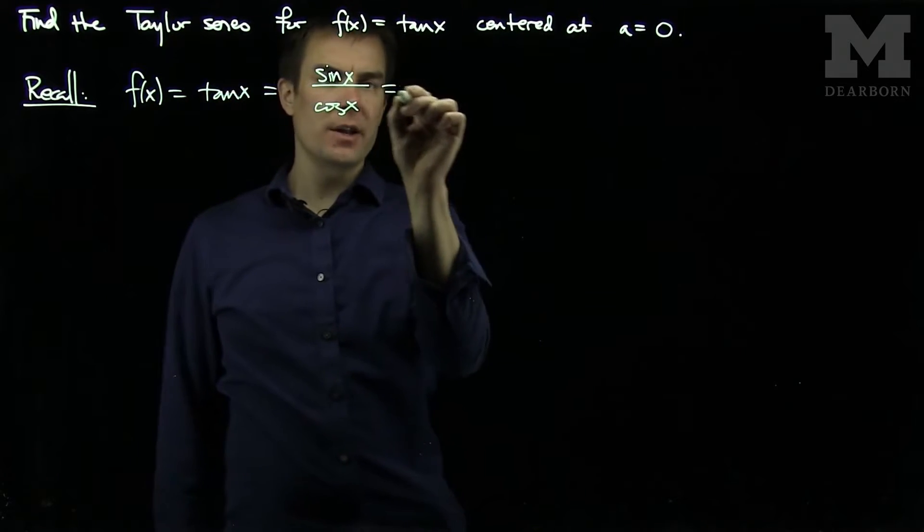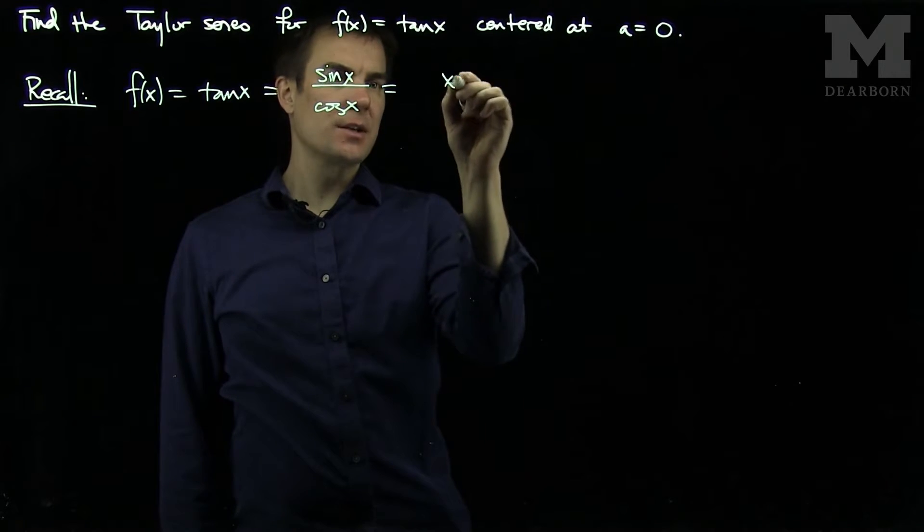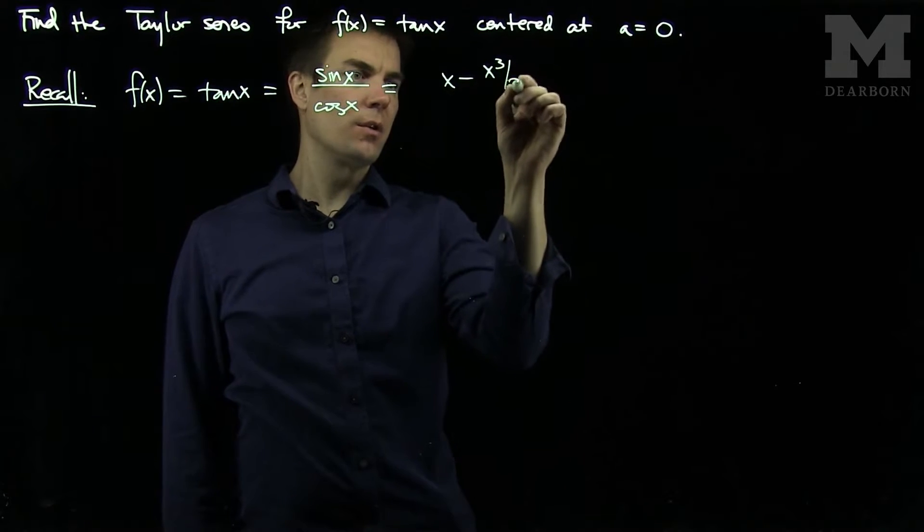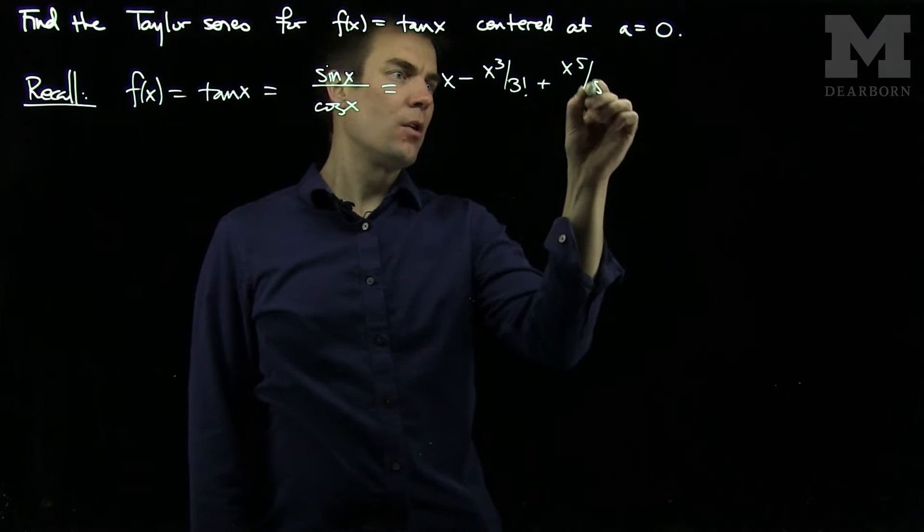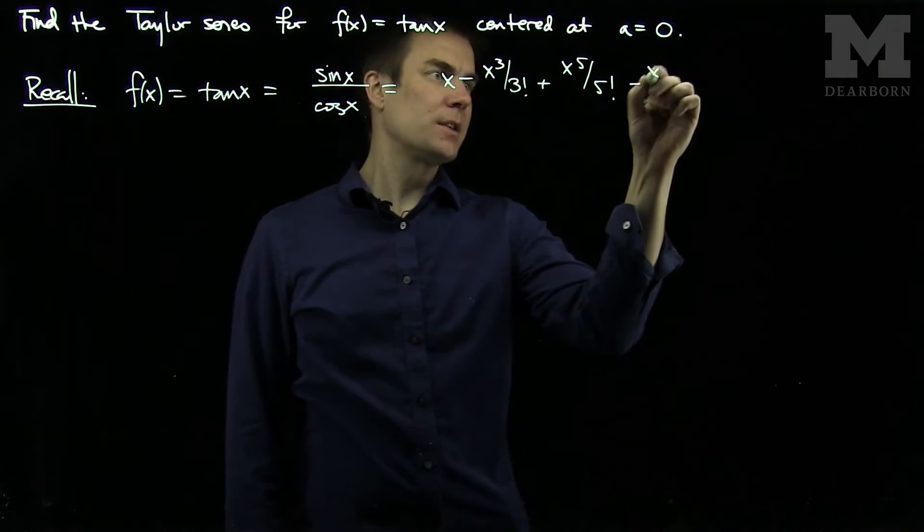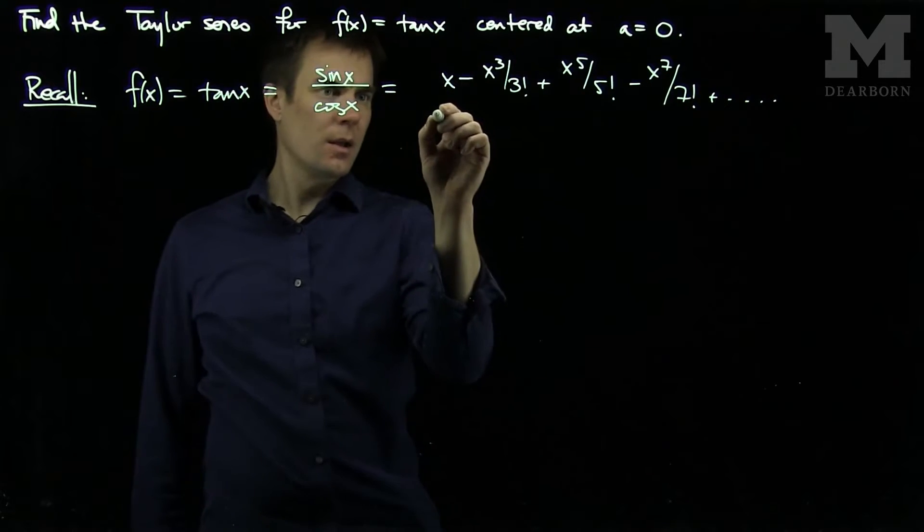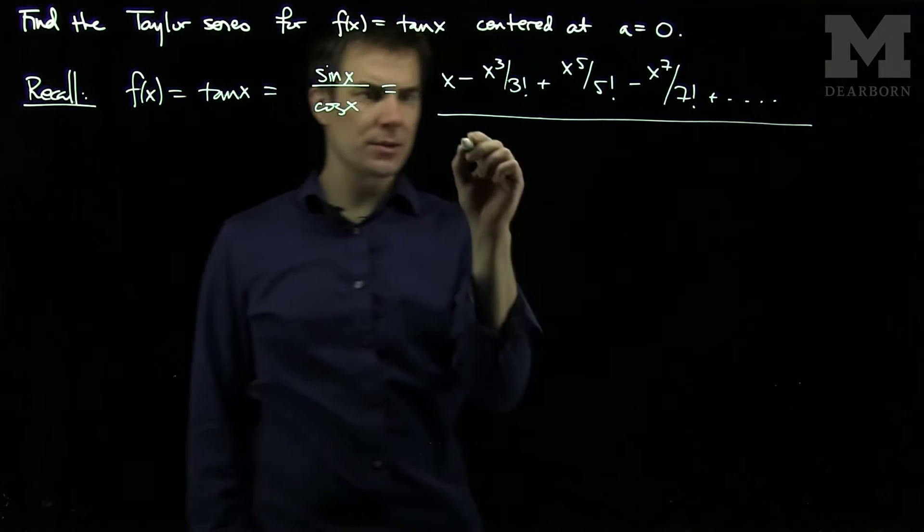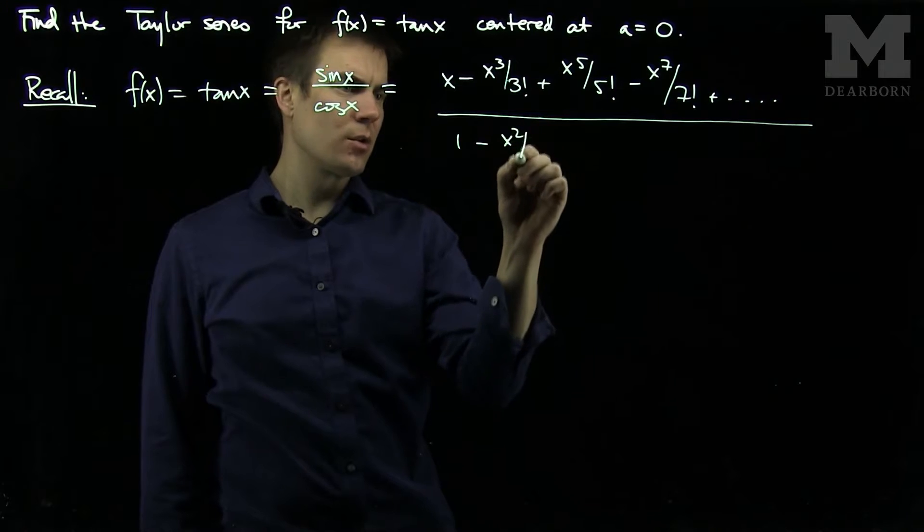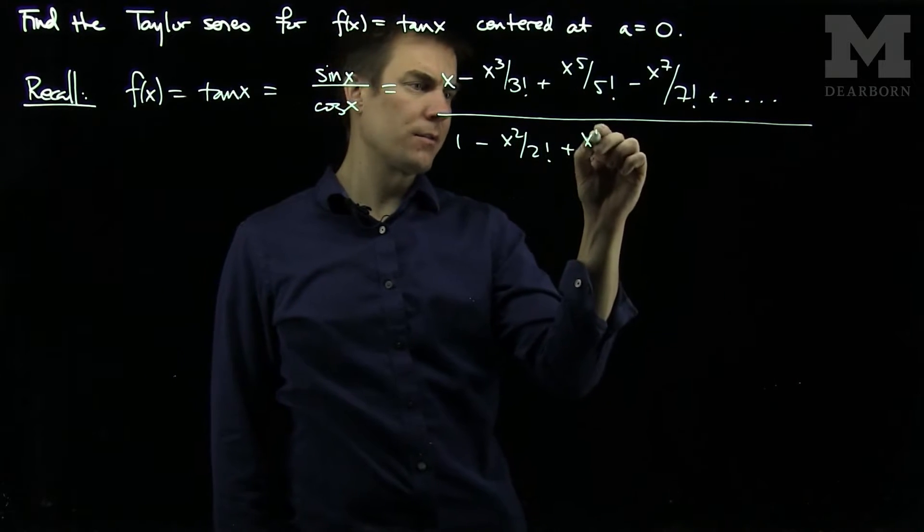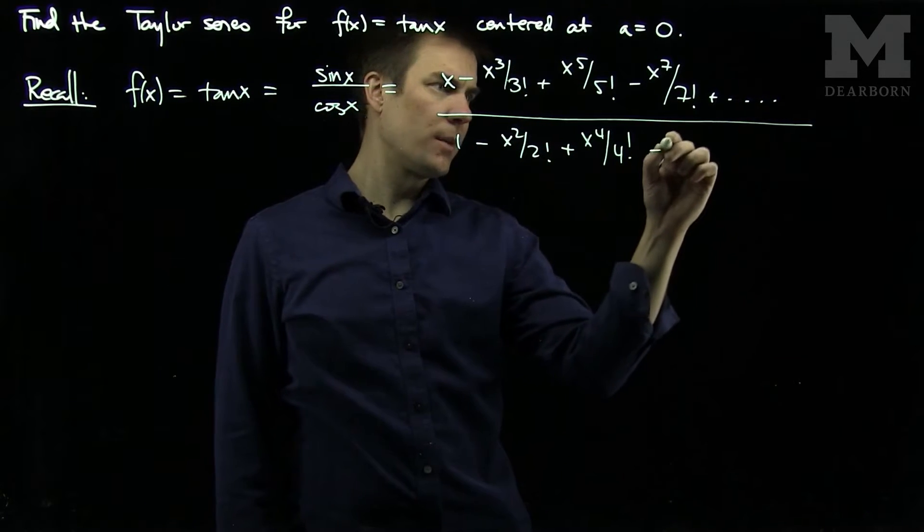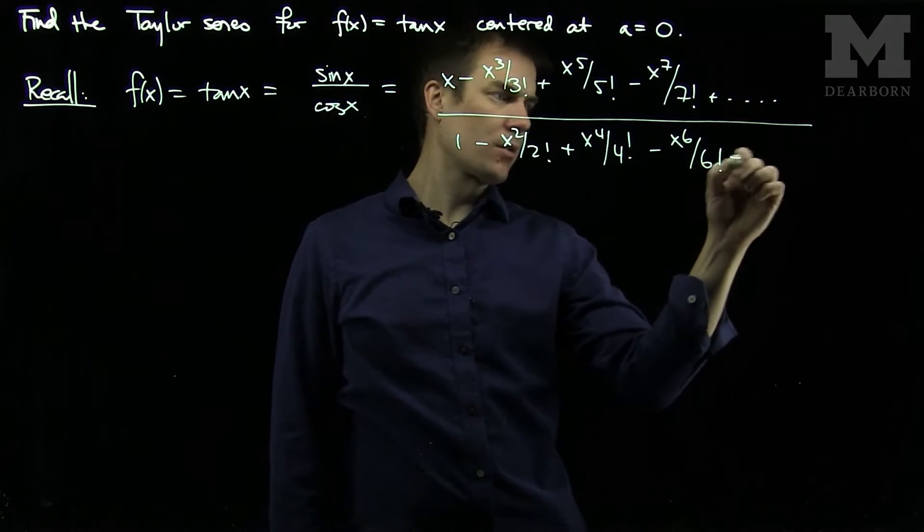And I can Taylor expand each of these. So sine is x minus x cubed over 3 factorial plus x to the fifth over 5 factorial minus x to the 7 over 7 factorial, and so on. And cosine is 1 minus x squared over 2 factorial plus x to the fourth over 4 factorial minus x to the sixth over 6 factorial, and so on.